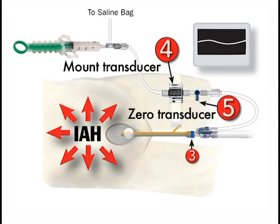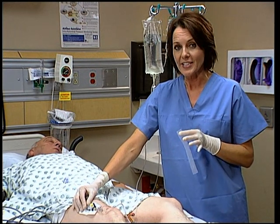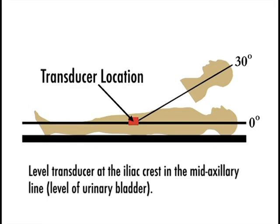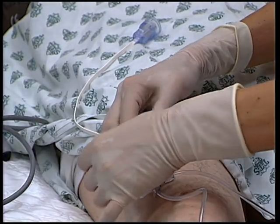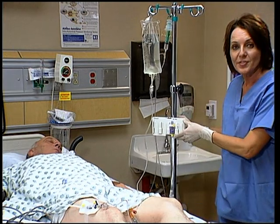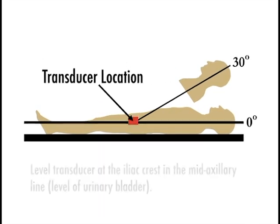Once you've attached the AbVisor valve to the urinary drain system, you cannot disconnect it without risk of damaging it. Now mount the pressure transducer to the patient or the pole. For patient mounting, place a 4x4 on the thigh at the level of the iliac crest in the mid-axillary line, and tape the transducer in place. If you choose to pole mount the transducer, place it in your pole mount bracket and adjust the bracket to the level of the iliac crest in the mid-axillary line.